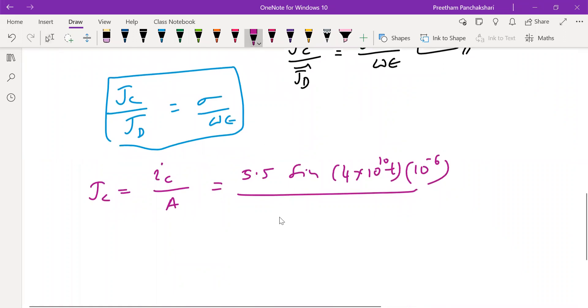So let us use area here. Area of circular cross-section is πr². So 5.5 micro, the sinusoidal term 4×10^10 t.